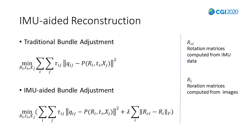We can now build the IMU data into the reconstruction. We did a modification to the original bundle adjustment. On the above is the traditional bundle adjustment function. Now, we add an extra restriction with lambda into the function, where R_CI stands for the rotation matrices computed from IMU, and R_I is the matrices to be optimized.